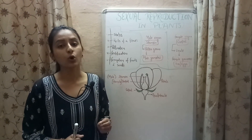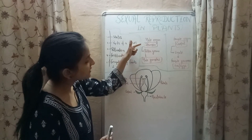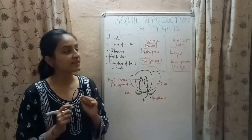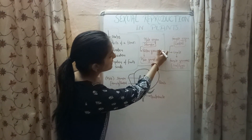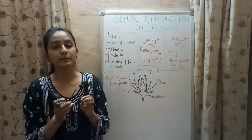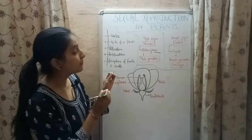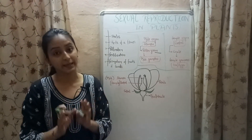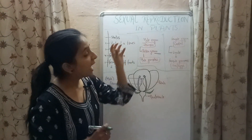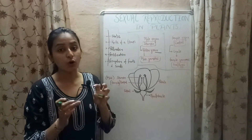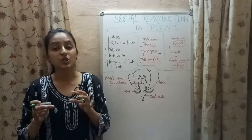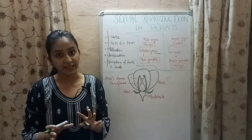The male organ of a flower is known as stamen, and inside the stamen microscopic particles are present which are known as pollen grains. It is the pollen grain part of a flower which contains the male sex cells or male gametes. The female organ of the flower is known as carpel, and a part of carpel called ovule contains the female gametes, which are also known as ova or eggs.